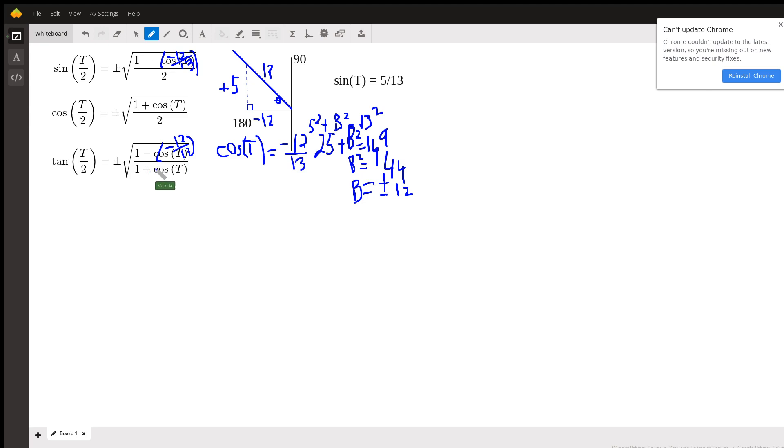This is negative 12 over 13. So we replace every cosine of theta with negative 12 over 13. Now this gets trickier because we have a complicated thing here. So let's first do the sine. So 1 minus a negative 12 over 13 makes that become positive.